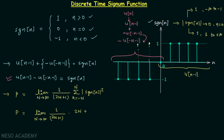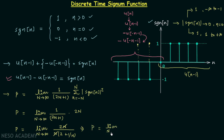Taking N common from the denominator, the average power P equals the limit as N tends to infinity of 2N divided by N times (2 + 1/N). The N's cancel, leaving P equal to the limit as N tends to infinity of 2 divided by (2 + 1/N). Putting N equal to infinity, 1/N becomes 0, so P equals 2 over 2, which equals 1 watt.